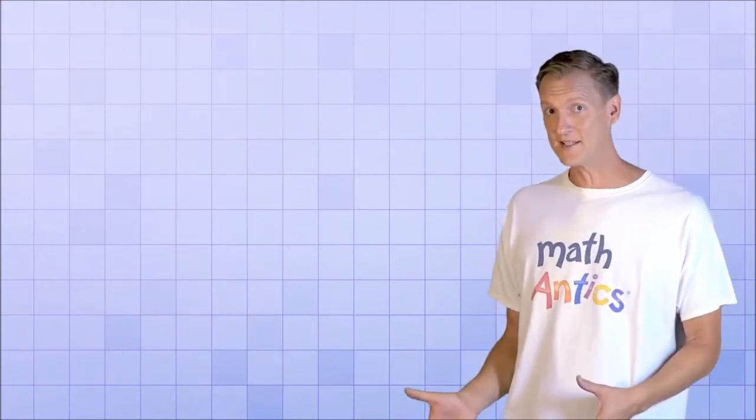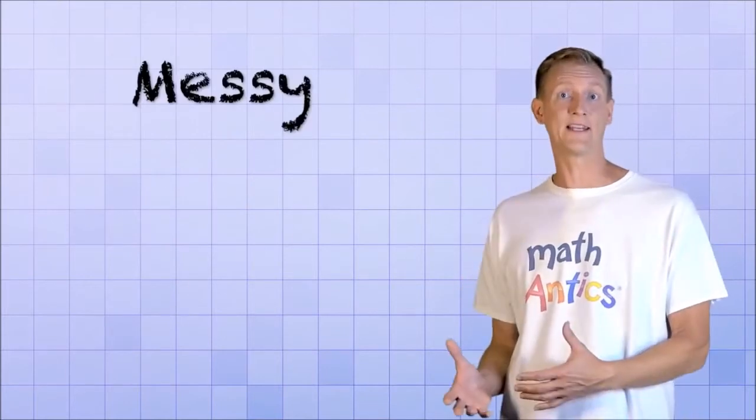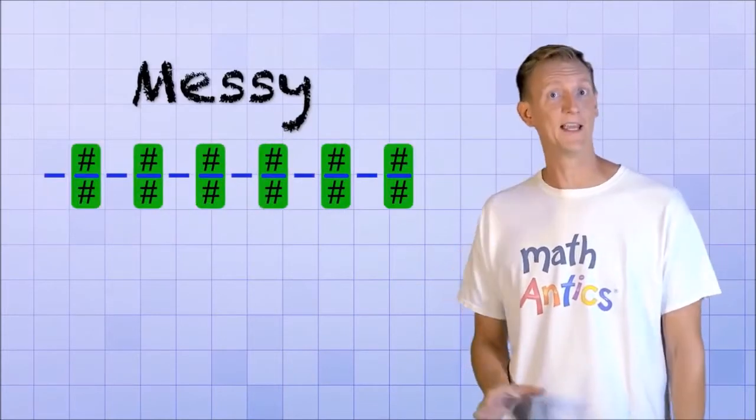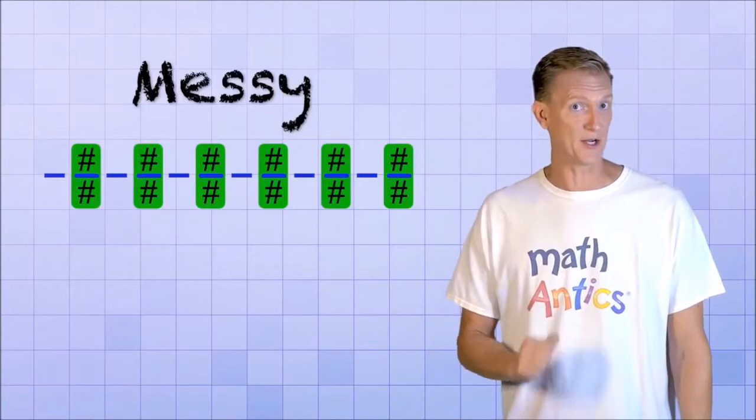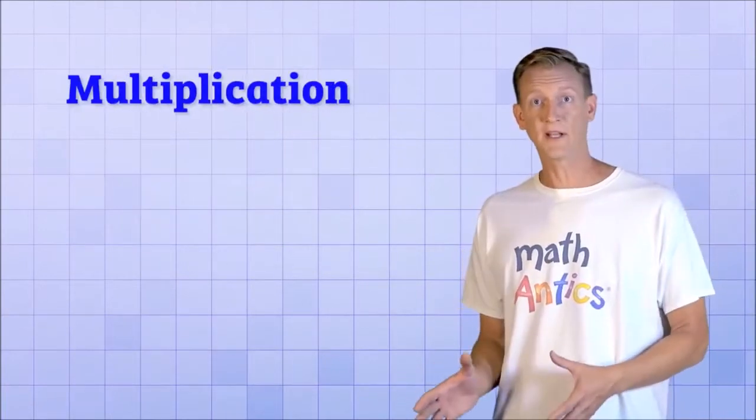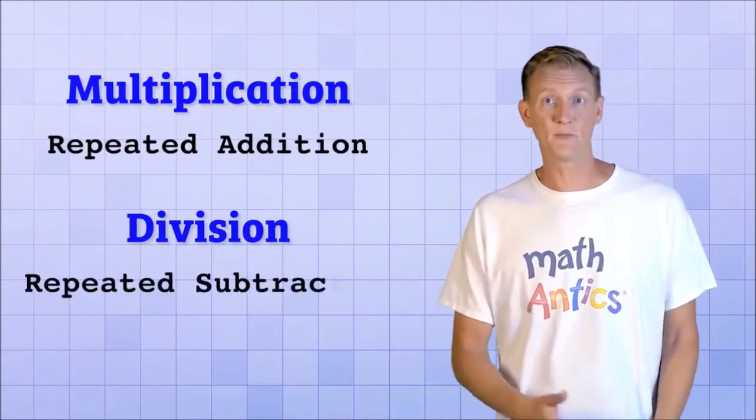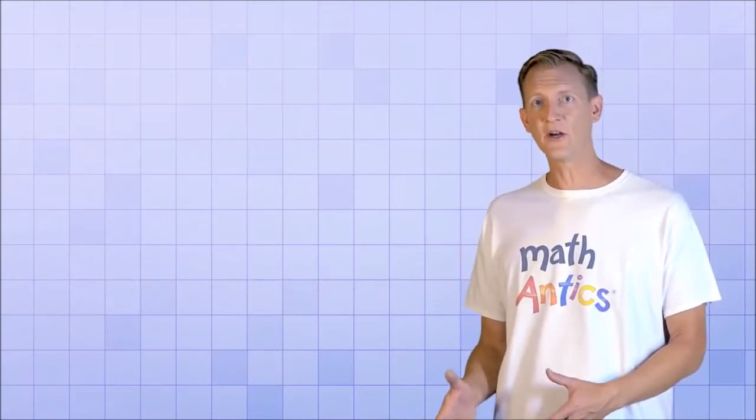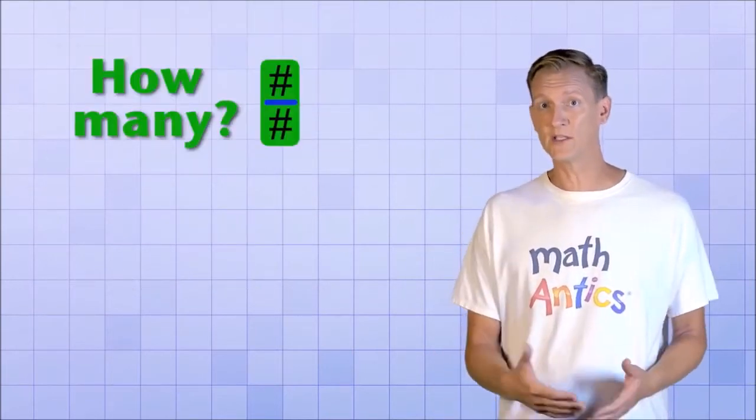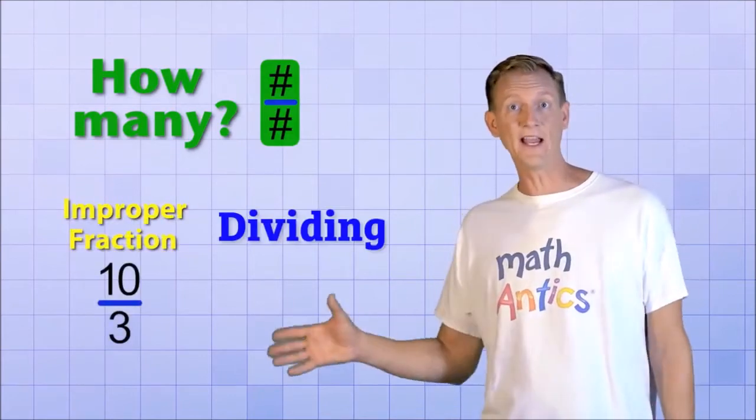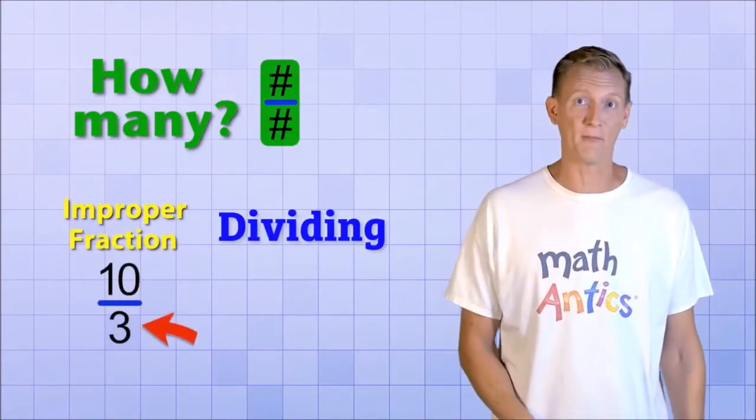That process makes sense, but it's kind of messy having to subtract out so many whole fractions. It turns out there's a shortcut we can take here too. Just like multiplication is repeated addition, division is basically repeated subtraction. That means we can figure out how many whole fractions we can subtract out of an improper fraction by just dividing the top number by the bottom number.